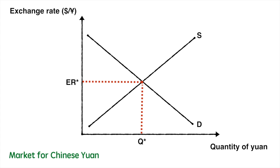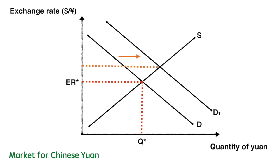Imagine that the Chinese government wants to keep the value of the currency at ER star relative to the dollar. If 1 dollar buys 8.28 yuan, then 1 yuan equals 0.1208 dollars, or about 12.1 cents — arrived at by dividing 1 dollar by 8.28. Suppose the demand for Chinese exports rises significantly and the yuan starts to strengthen against the dollar, making Chinese exports more expensive to American buyers.